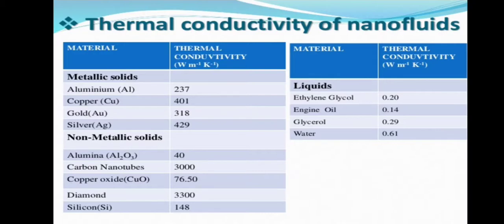With respect to non-metallic fluids, it is a bit high and a bit low for few materials. So alumina is 40 as compared to others. We have carbon nanotubes and diamond which really have high thermal conductivity, which is 3000 and 3300 comparatively. Then we have copper oxide which is 76.50, and silicon at 148.